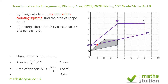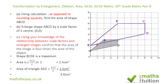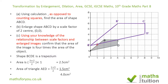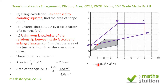For section C, the question says: using your knowledge of the relationship between scale factors and enlarged images, confirm that the area of the image is four times the area of the object. The relationship is that area scale factor equals linear scale factor squared. In this case, 2 squared is 4, so the area scale factor is 4.